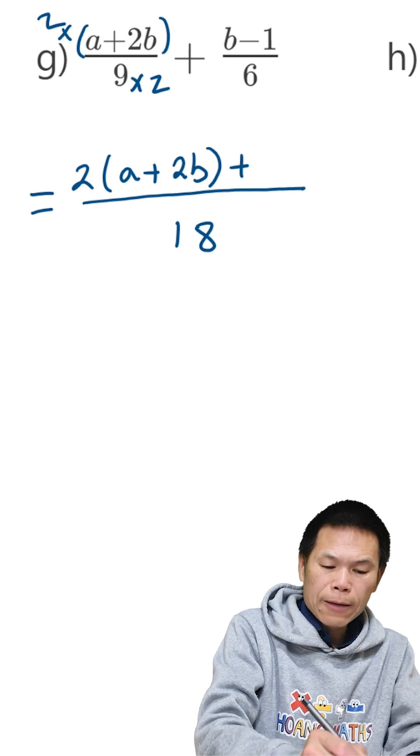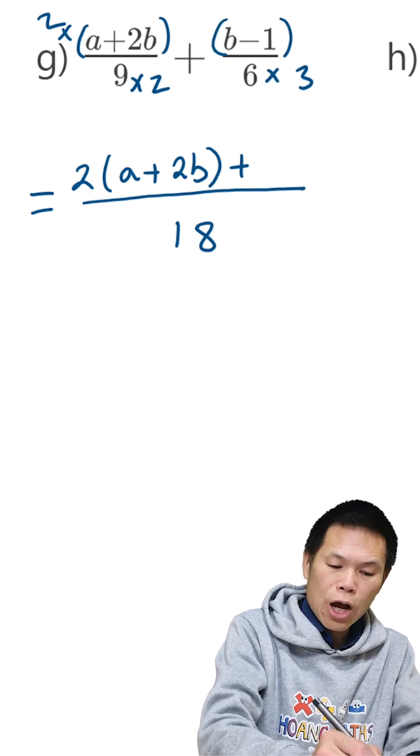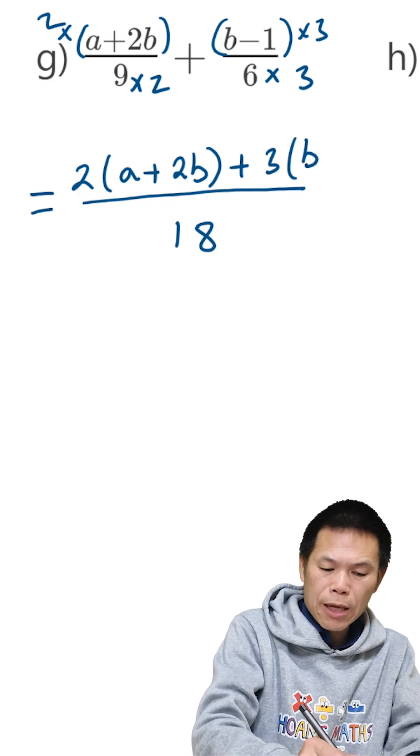We add to get 6 to 18, times 3. So the top times 3. So that is 3 brackets, b minus 1.